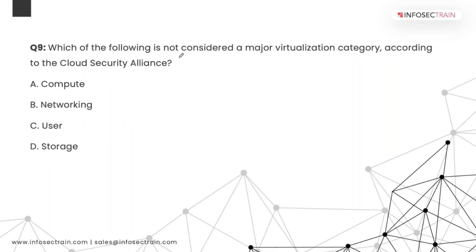Question 9: Which of the following is not considered a major virtualization category according to the Cloud Security Alliance? The answer is user virtualization. Compute virtualization, networking virtualization, and storage virtualization are all used. User virtualization has not been achieved yet in most environments.